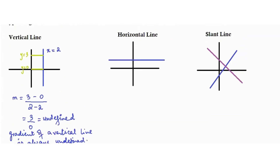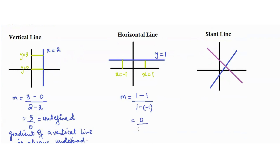Moving on to the horizontal line — let's assume it is y equals 1. Picking two x values: x equals negative 1 and x equals 1. So m equals 1 minus 1 over 1 minus negative 1, which is 0 over 2, equal to 0. The gradient of a horizontal line is always 0.